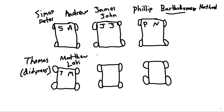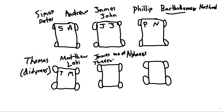Golf cart five — this is where it gets trickier. We have James the son of Alphaeus, and Thaddeus, also known as Judas — not Judas Iscariot, but Judas. So JT for that cart.